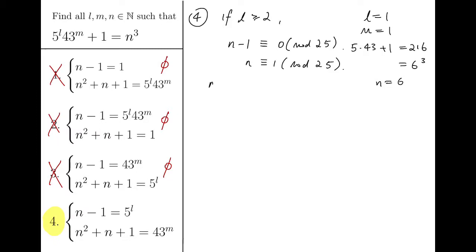Then we put this into the other equation then we will have N squared plus N plus 1 is congruent to 1 squared plus 1 plus 1 mod 25 which is congruent to 3 mod 25. Here comes the magic: powers of 43 have a very short pattern when we take mod 25. So, note that 43...